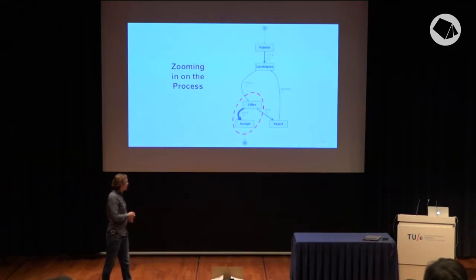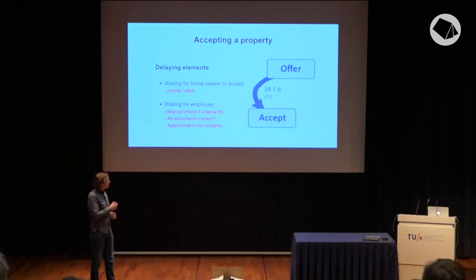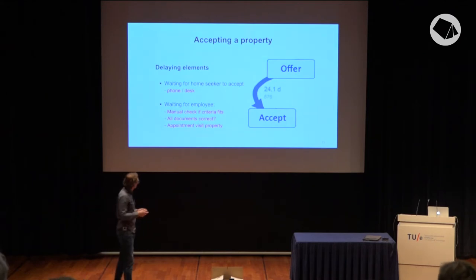The last bottleneck is the exception part — when we zoom in, we see it takes 24 days to accept the property. This is also quite long. The first part involves the home seeker who has to telephone or go to the desk to say yes. There's also a problem with the employee because after the exception is made, the employee has to check if all criteria fit the property and if all documents are correct. Eventually they have to make an appointment to visit the property and verify everything is in order.